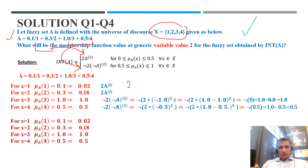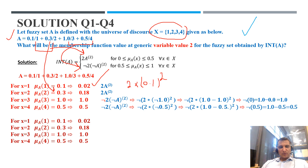For membership value 0.1: we multiply 2 × (0.1)² = 2 × 0.01 = 0.02. For 0.3: applying the same formula gives a new value of 0.18. As stated, when the value is between 0 and 0.5 the new membership value decreases — 0.1 reduces to 0.02, and 0.3 reduces to 0.18.